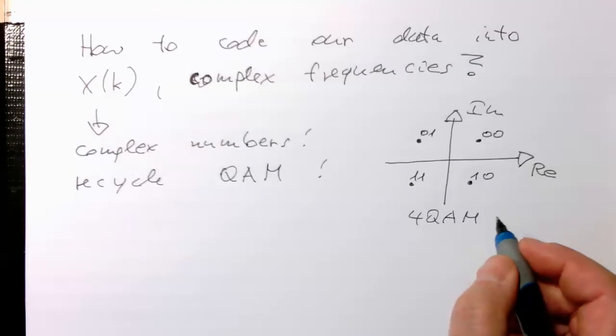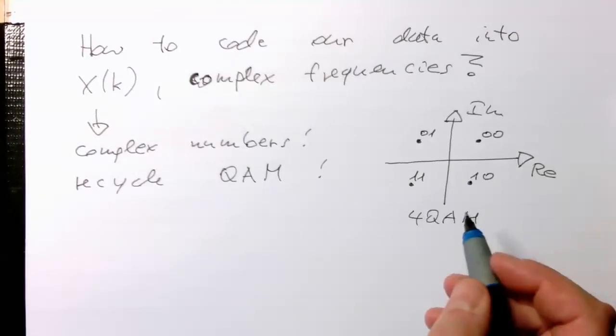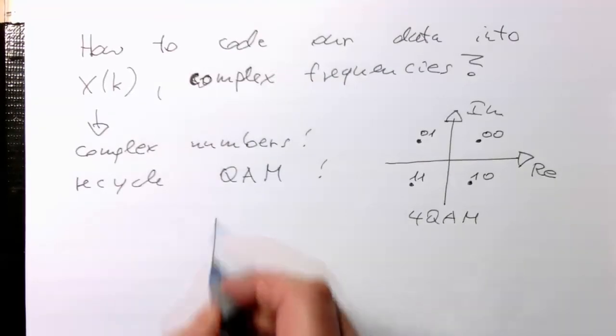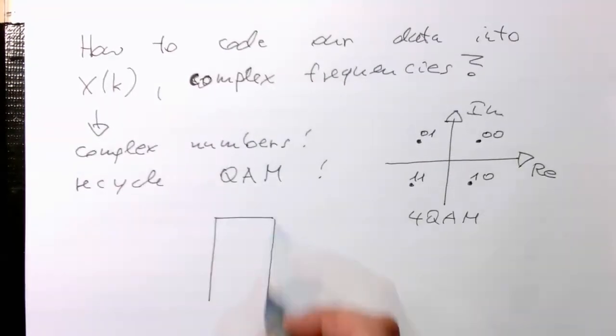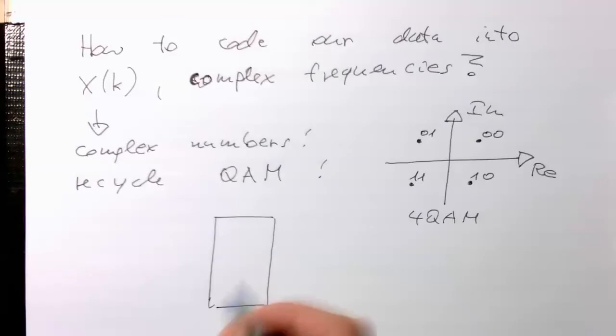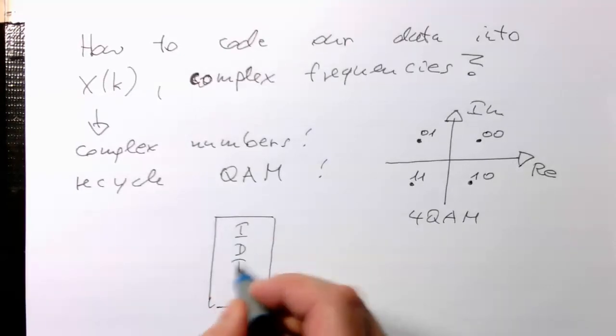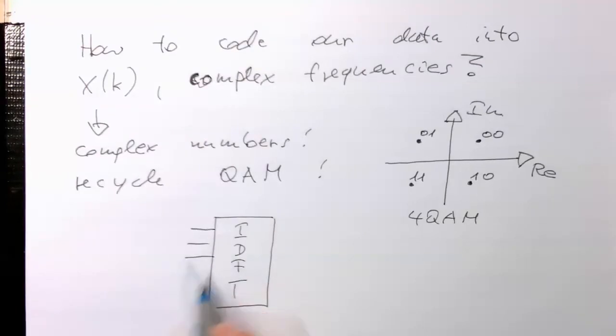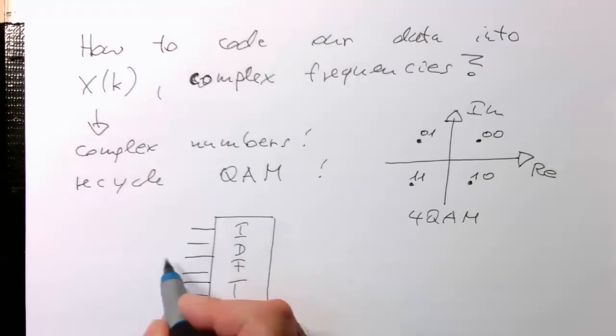And so very simple. So essentially for every, if I just draw here, the inverse Fourier transform again. So the IDFT. And so now we've got all these complex numbers coming in here. So these are our frequencies. So that's our X(k).